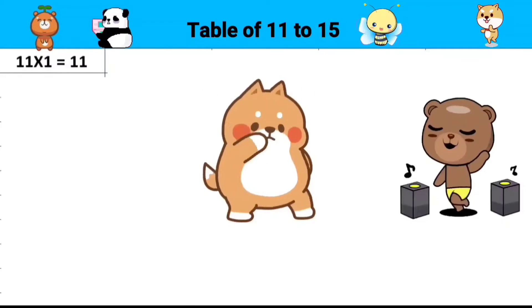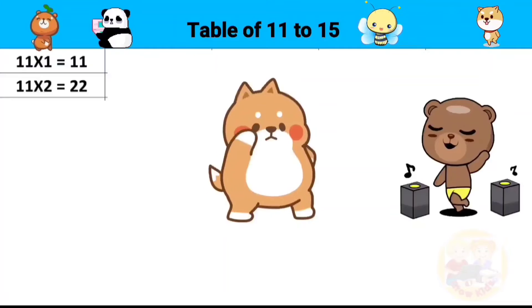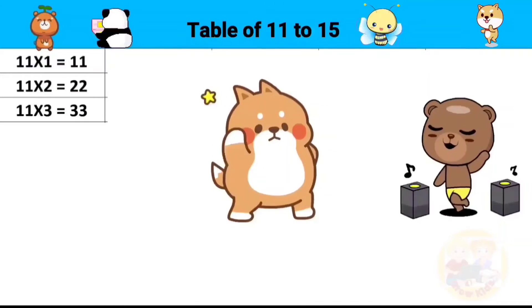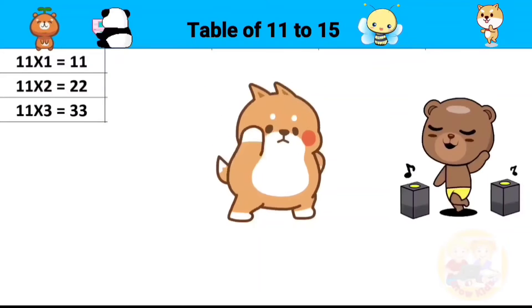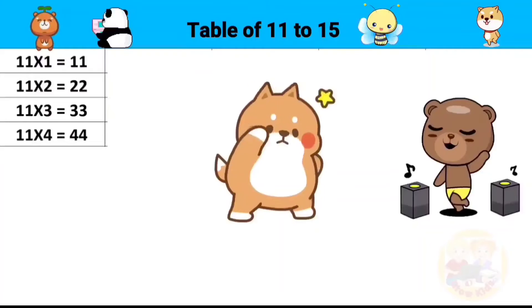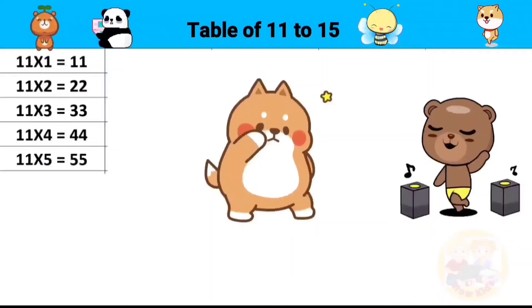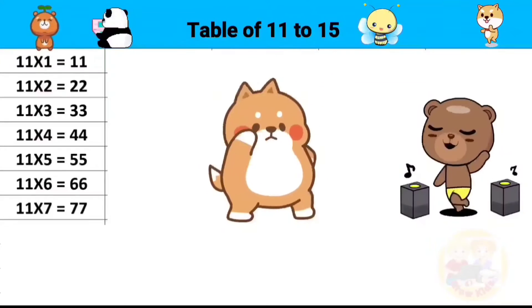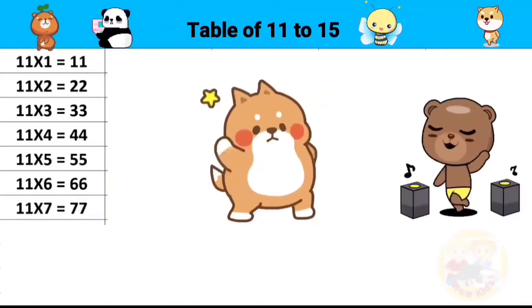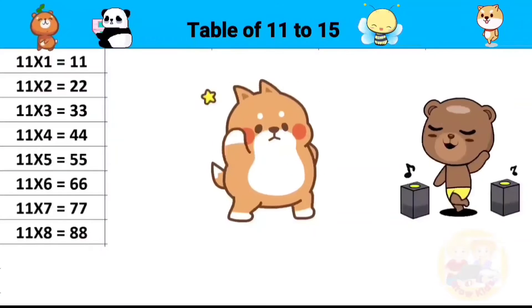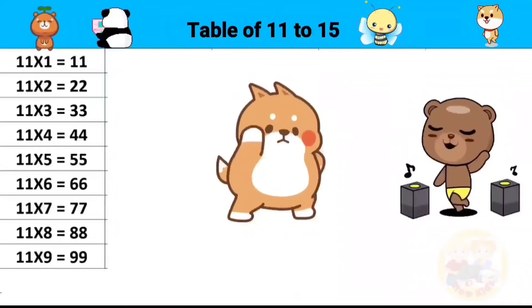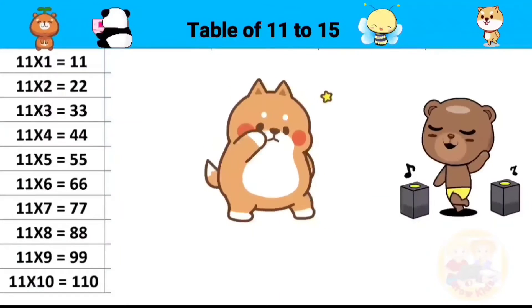Table of 11. 11 ones are 11, 11 twos are 22, 11 threes are 33, 11 fours are 44, 11 fives are 55, 11 sixes are 66, 11 sevens are 77, 11 eights are 88, 11 nines are 99, 11 tens are 110.